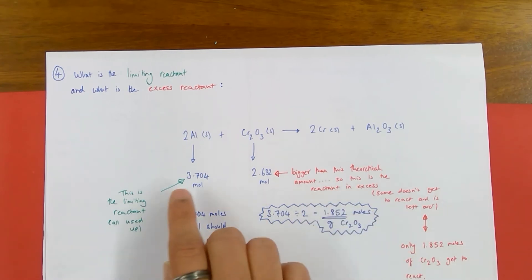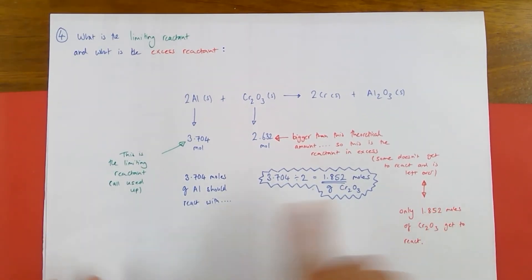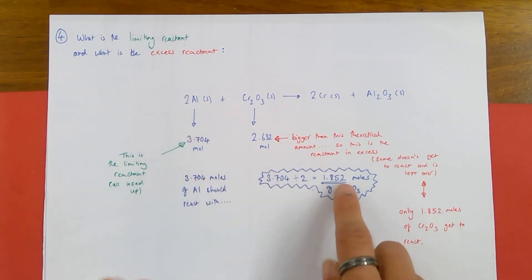Therefore, by process of elimination, the aluminium must be the limiting reactant. It all gets used up in the reaction, and there's no excess, whereas there is leftover chromium 3 oxide. I can actually work out how much is left over, but also how much is used, because if I know this reacts exactly with 1.852 moles of chromium 3 oxide,